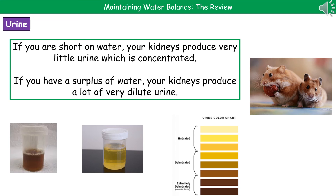Not all creatures produce the same colour urine as humans. Some animals are designed for dry environments where water isn't abundant. Hamsters, for example, are designed to live in dry conditions, so their bodies keep as much fluid as possible, always producing very concentrated urine — which is why if you've ever had one as a pet, they can smell quite strongly.